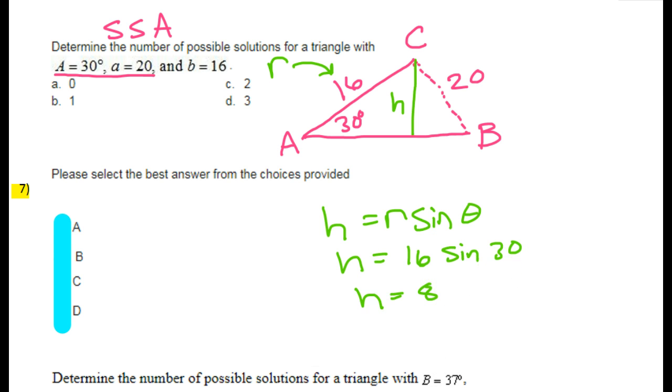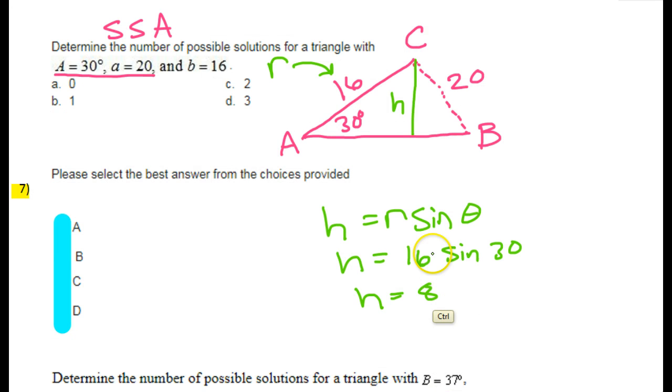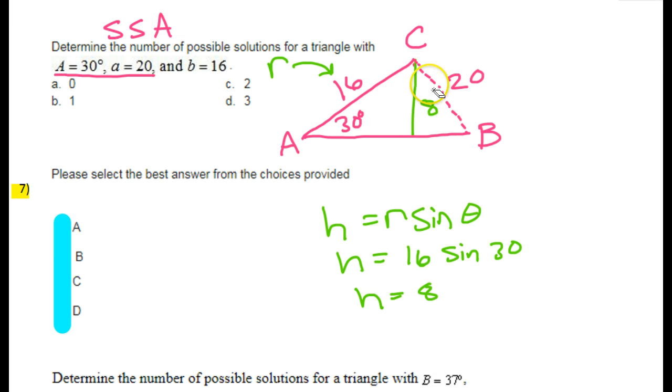If you did not know that, you could use your calculator: 16 sin 30. Make sure your calculator is in degree mode, not radians. So we get 8, just like I said. Now we know that the height is 8.